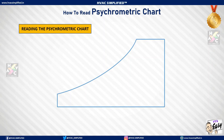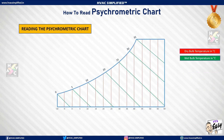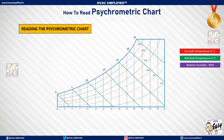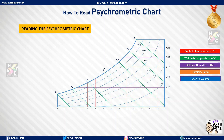Now let us put all the lines together on a psychrometric chart to understand how it actually looks. The chart includes dry bulb temperature, wet bulb temperature, relative humidity, humidity ratio, and specific volume. Although this may look complicated, it is actually a very simplified and easy-to-use psychrometric chart.